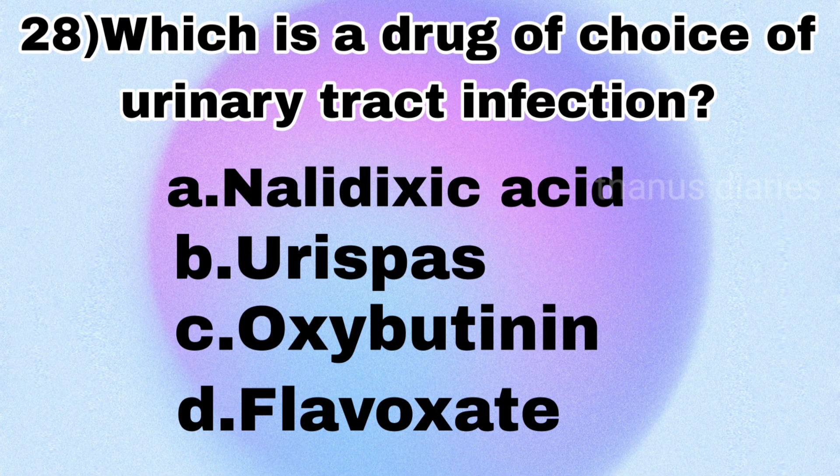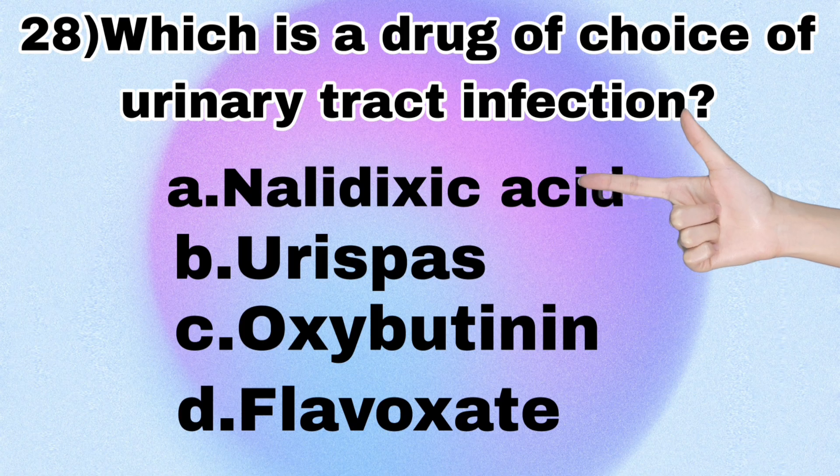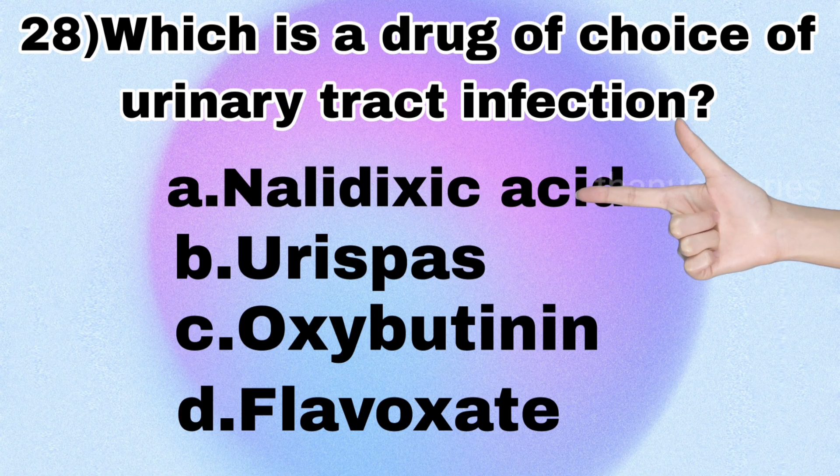Which is the drug of choice for urinary tract infection? — Nalidixic acid, urispas, oxybutynin, or flavoxate? The answer is nalidixic acid.